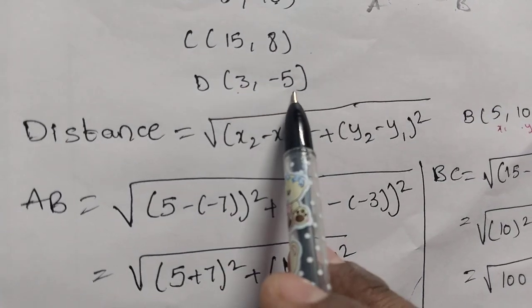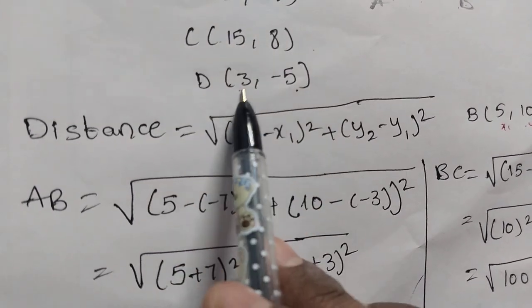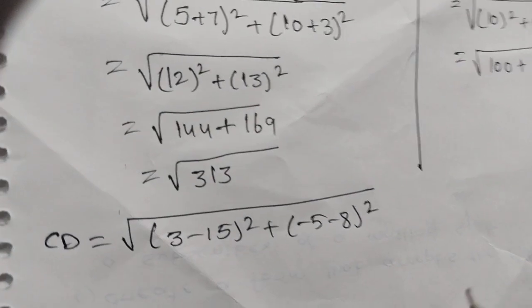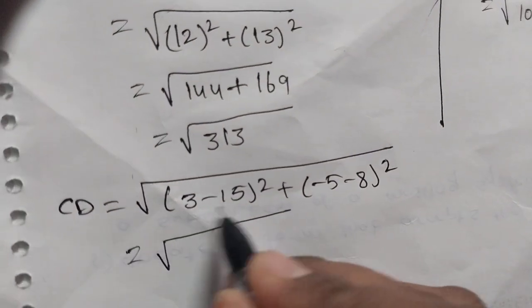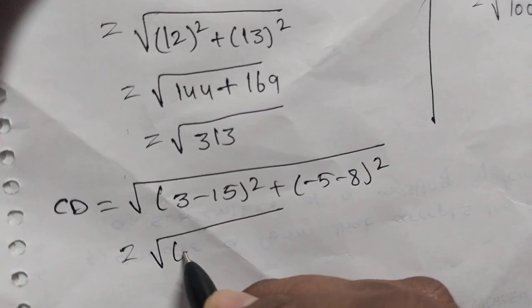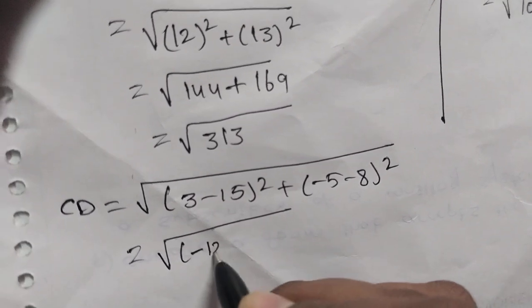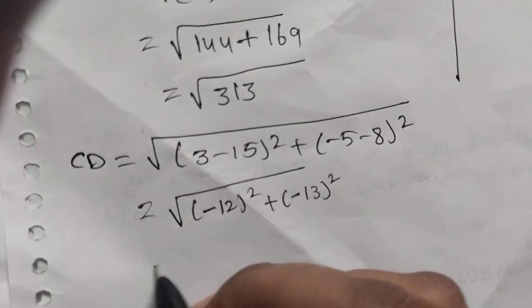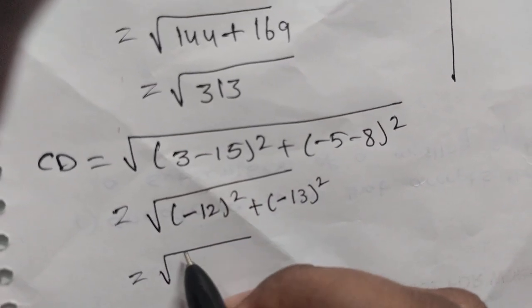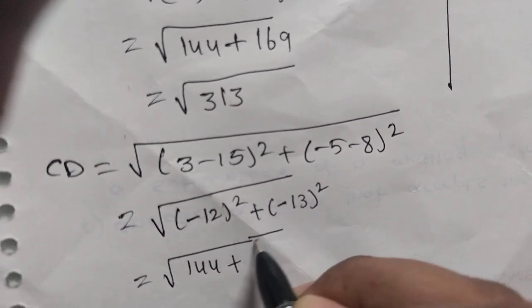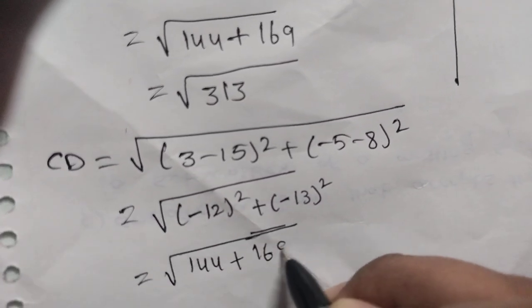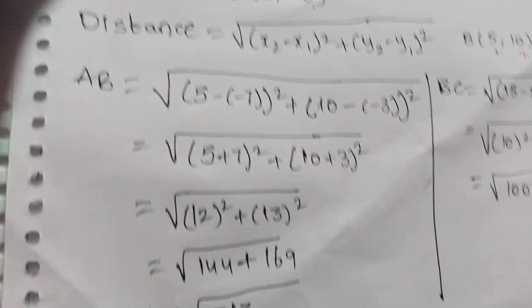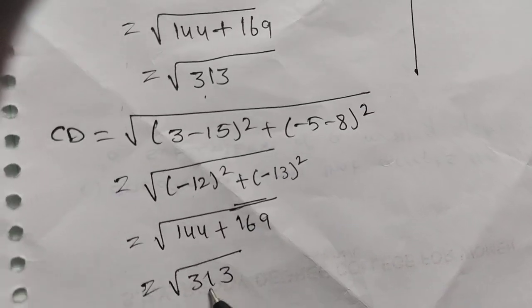Now we find CD. Using C(15, 8) as (x1, y1) and D(3, -5) as (x2, y2): CD = √((3 - 15)² + (-5 - 8)²) = √((-12)² + (-13)²) = √(144 + 169) = √313.